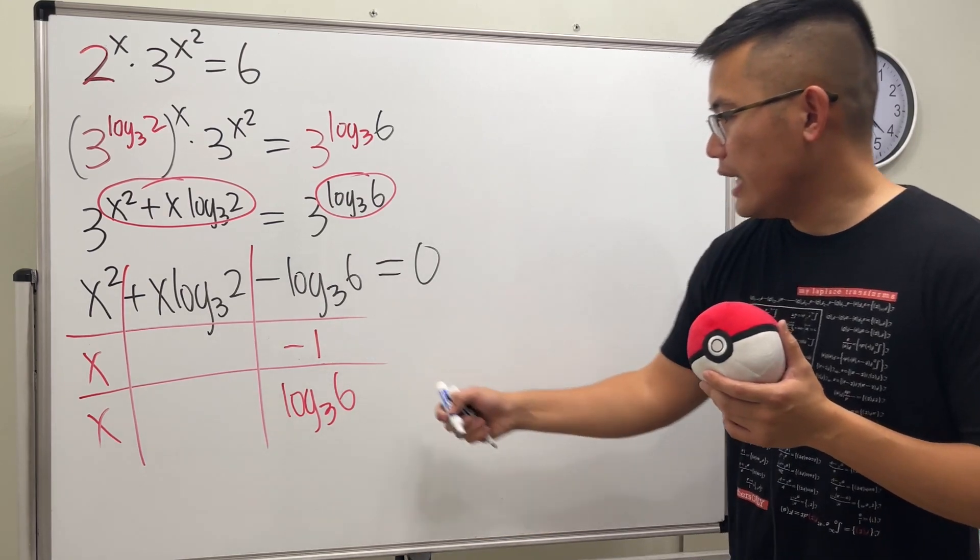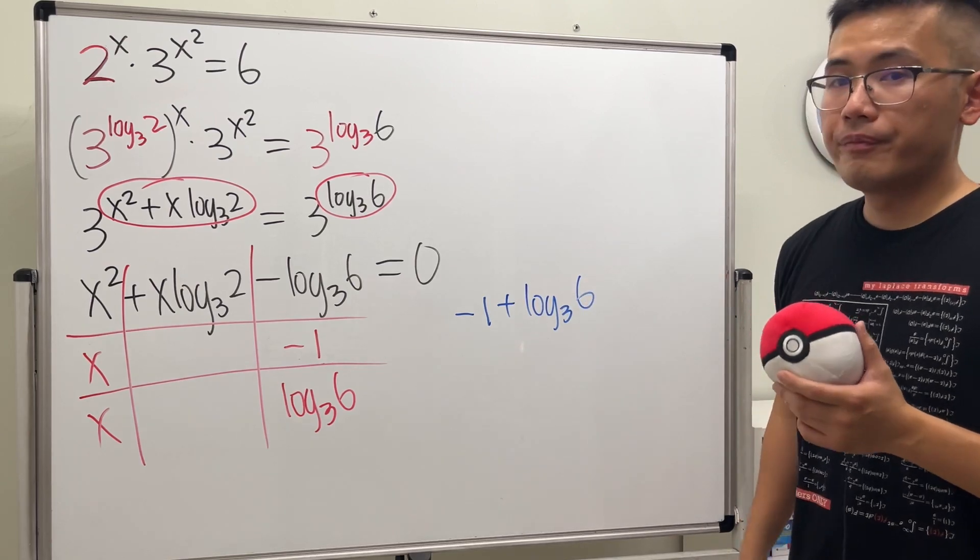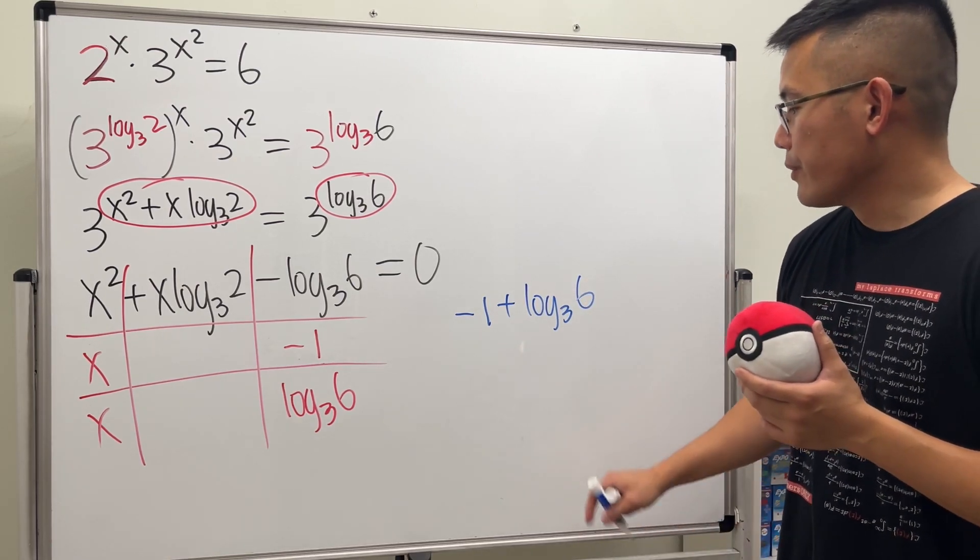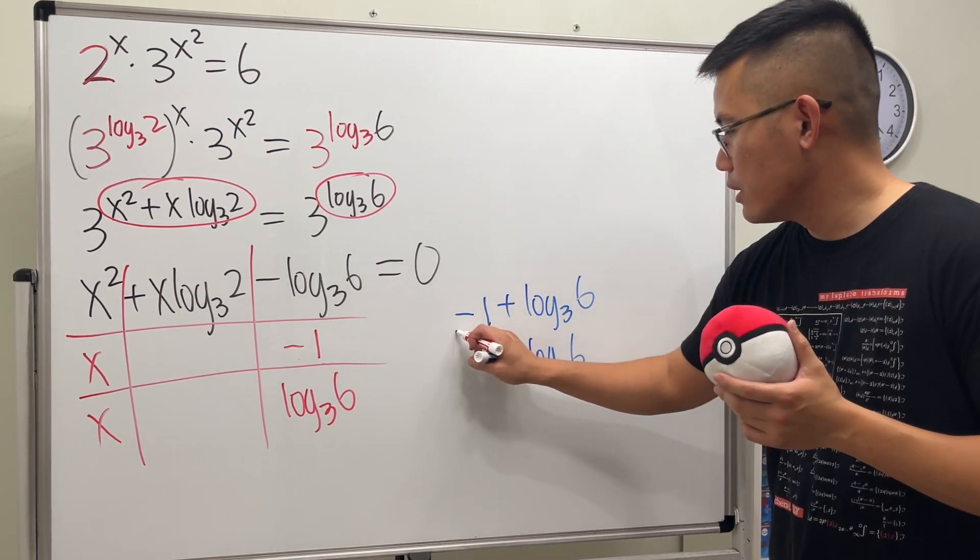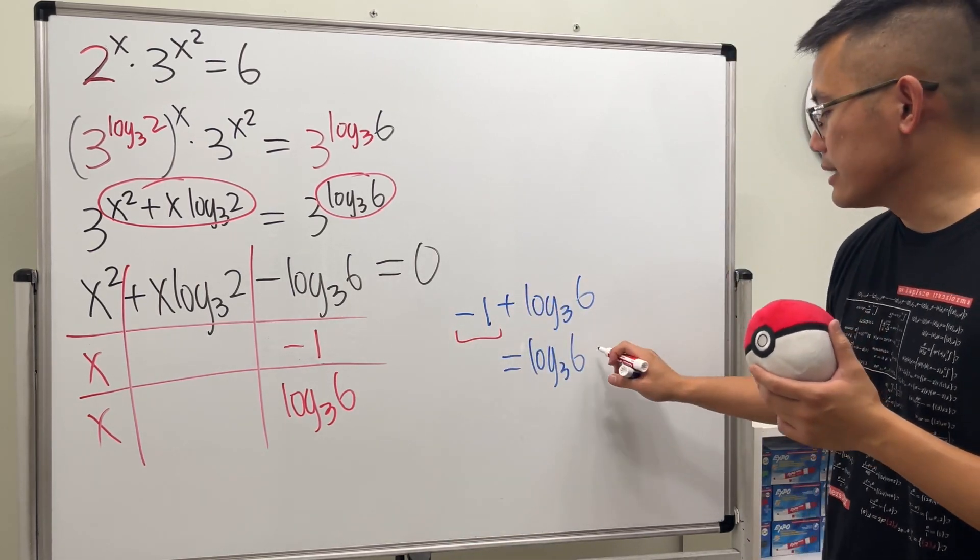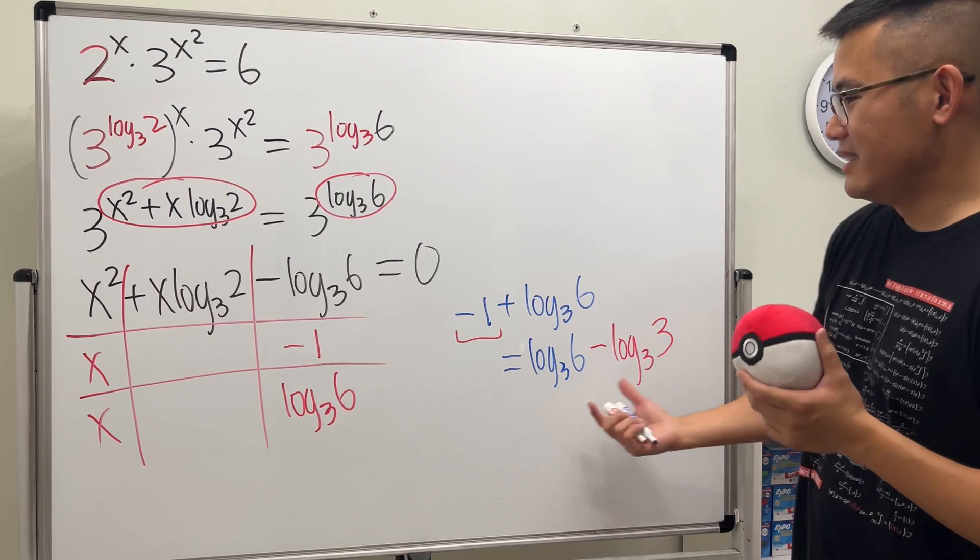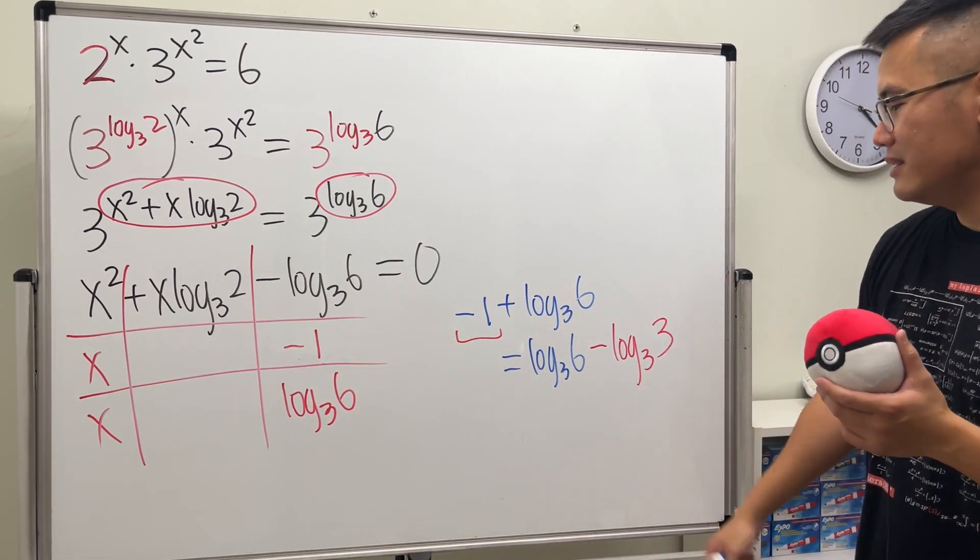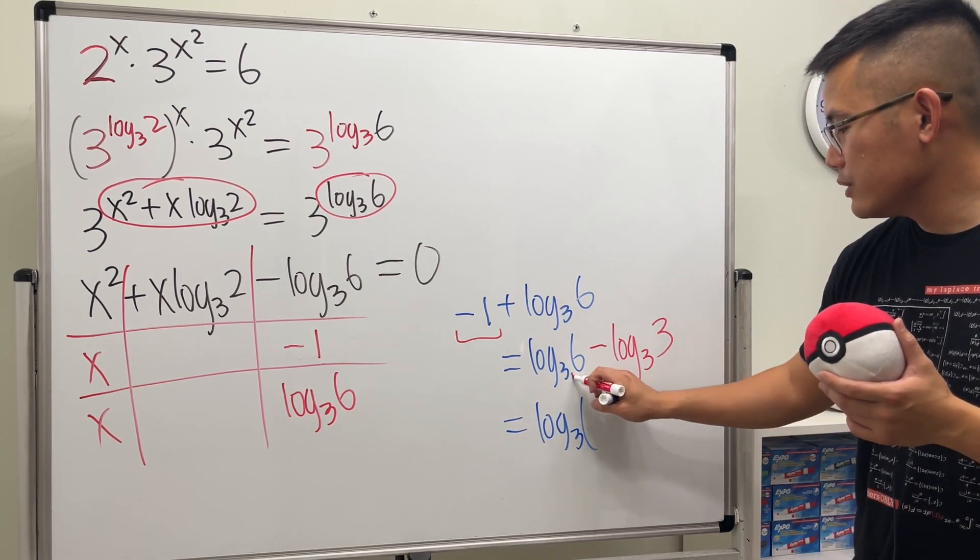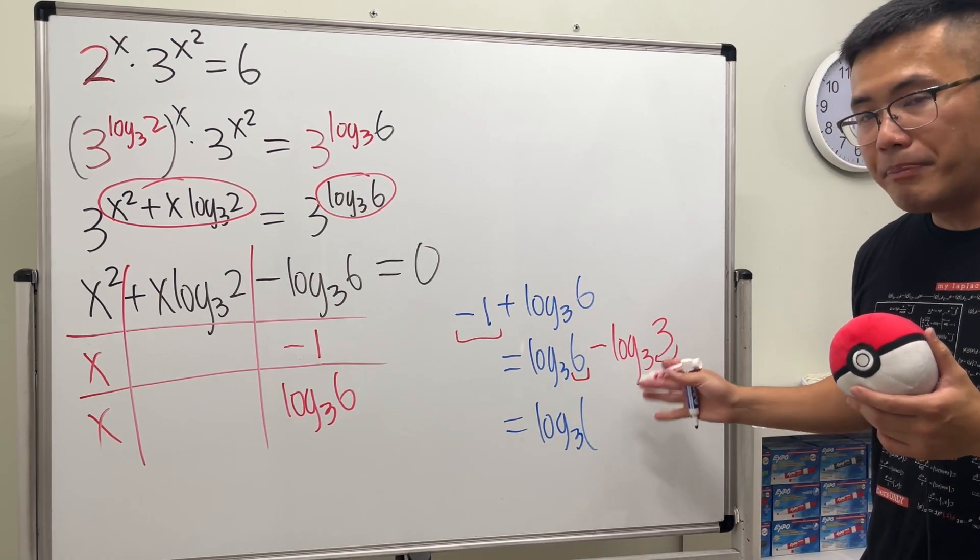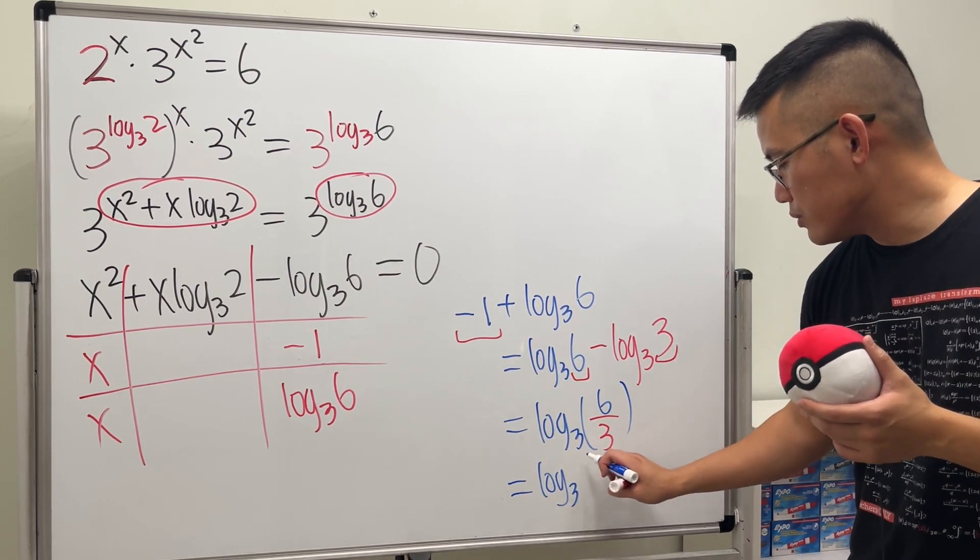Let me show you. If we look at negative 1 plus log base 3 of 6, you know what we can do? We can look at this as log base 3 of 6, and then look at the negative 1, we are going to purposely rewrite this as minus log base 3 of 3. How's that? Good, huh? So technically this is the same stuff. The reason that we want to do this is because in fact this is log base 3 and then we can just do 6 divided by 3 by the log property, so we do end up with positive log base 3 of 2.